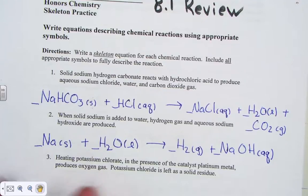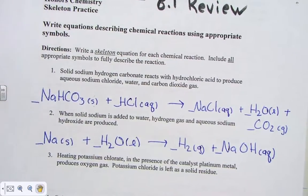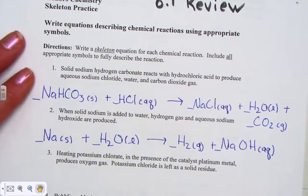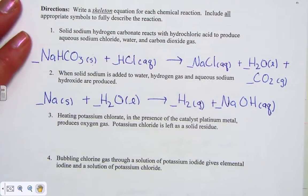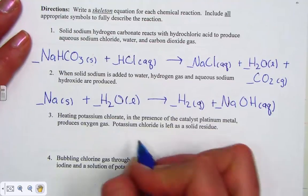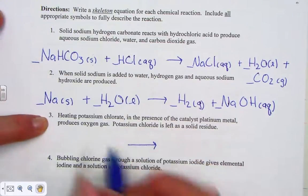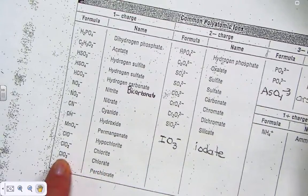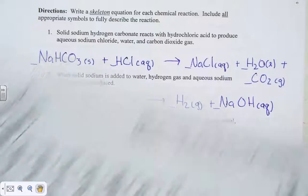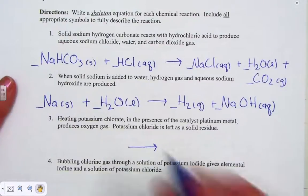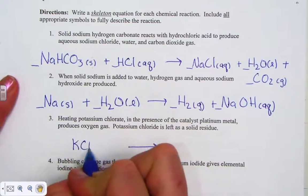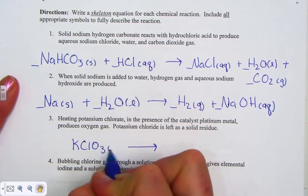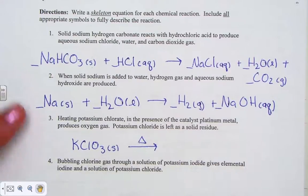Heating potassium chlorate in the presence of the catalyst, platinum metal, produces oxygen gas. Potassium chloride is left as a solid residue. We're heating potassium chlorate, you see that chlorate ending, ClO3, chlorate, potassium with its plus one. So the reactant, KClO3, we're heating it in a test tube so we know that it will be a solid state, KClO3 solid, heating it.